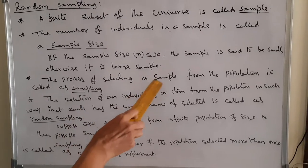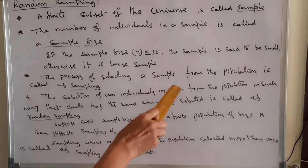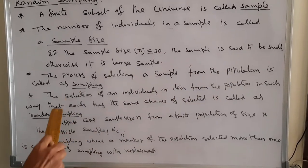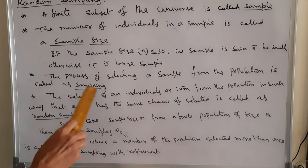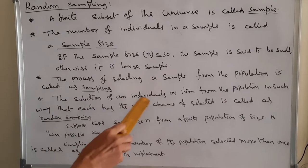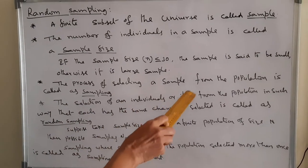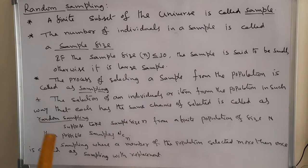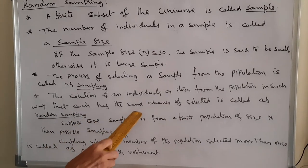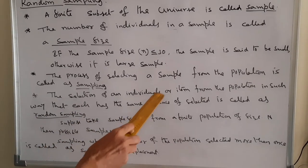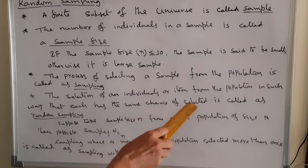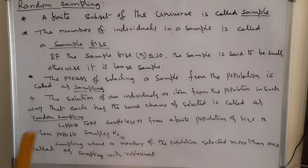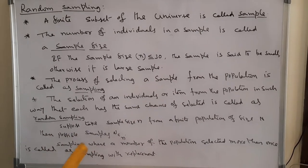The process of selecting a sample from the population is called sampling. The selection of an individual or item from the population in such a way that each has the same chance of being selected is called random sampling.